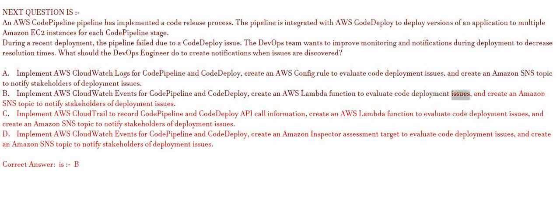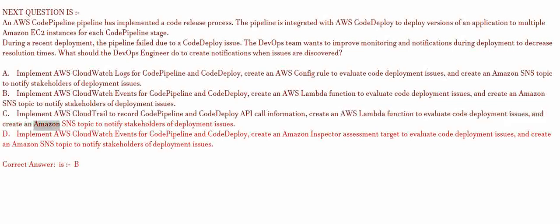C. Implement AWS CloudTrail to record CodePipeline and CodeDeploy API call information. Create an AWS Lambda function to evaluate code deployment issues, and create an Amazon SNS topic to notify stakeholders of deployment issues.